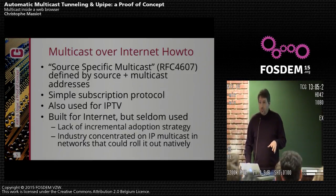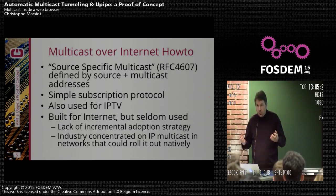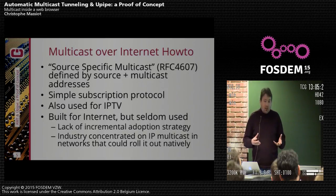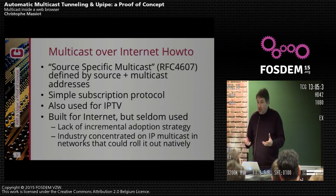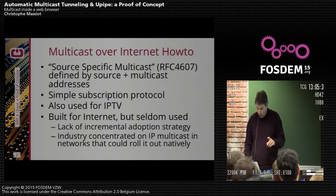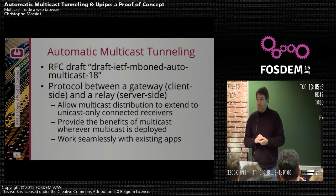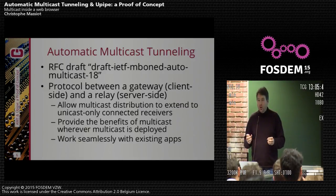Also, people in the industry like Cisco, Juniper, and Alcatel concentrate on delivering IP multicast for networks that could already support it. They're not interested in the big internet — so far. A few players have gathered to create a new RFC, currently only a draft, called Automatic Multicast Tunneling, AMT.